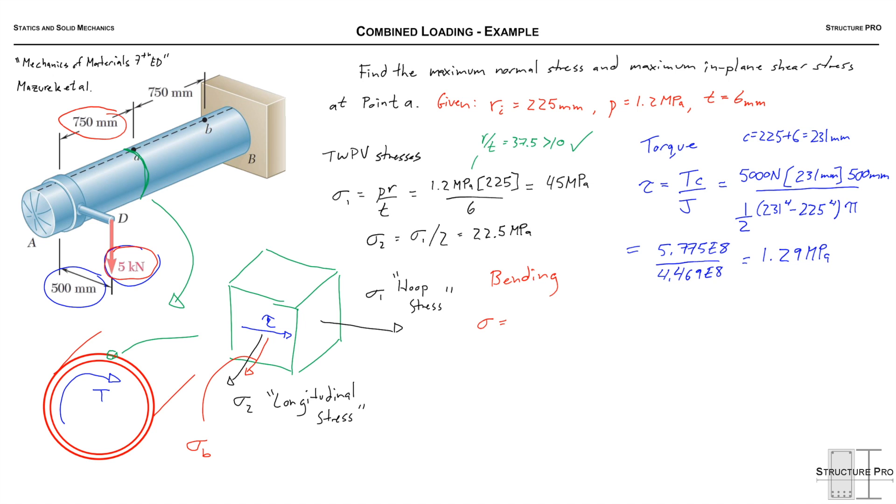Next we'll move to our bending stress, our sigma b we called it, and that's mc over i, the common flexural equation there. The C is the same as for the torque, and the m in this case has a different moment arm, the 750 millimeters.